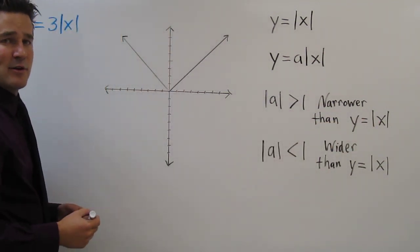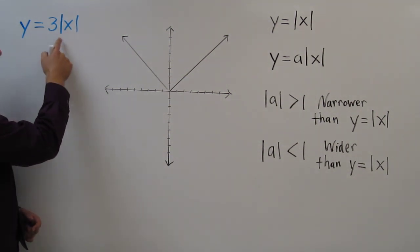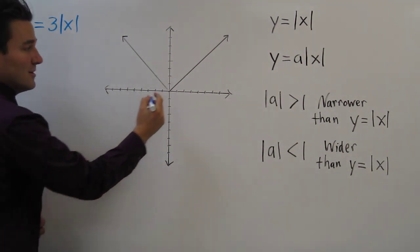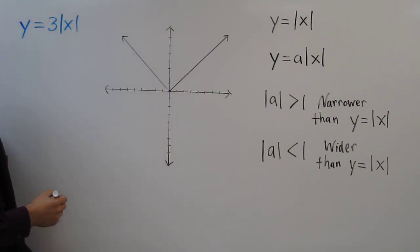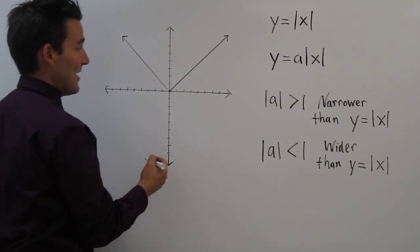Let's plug some points and see what it will be. When x equals 0, 0 times 3 is 0, so we have the coordinate (0, 0). When x equals 2, the absolute value of 2 is 2, so 2 times 3 is 6. So we have (2, 6).